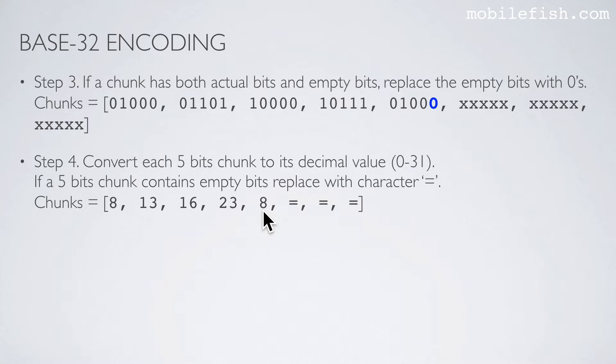If a 5-bit chunk contains empty bits, replace it with the equal sign character. These are all empty bits, so we replace them with equal signs for the padding.